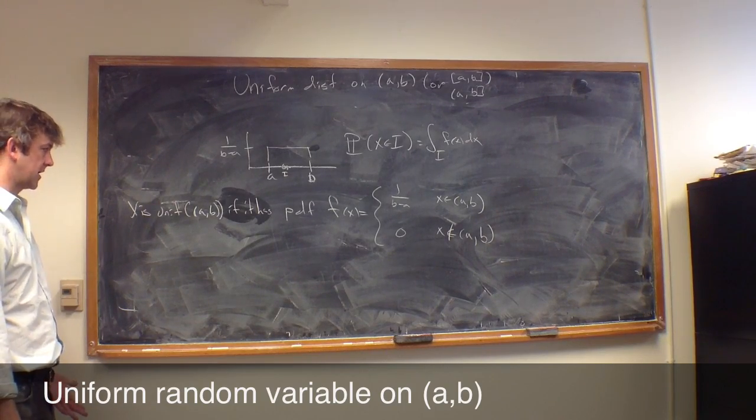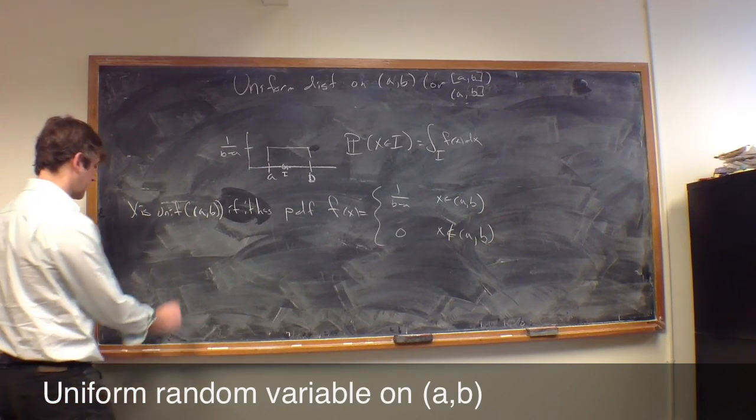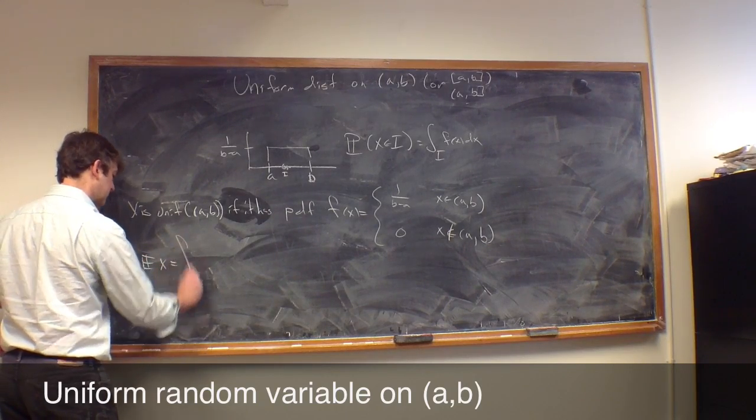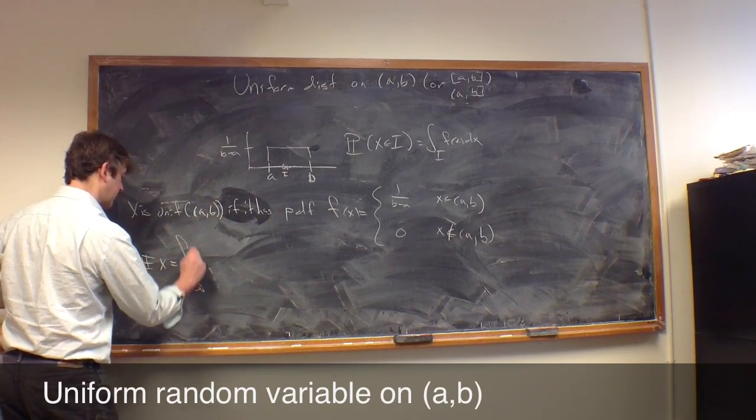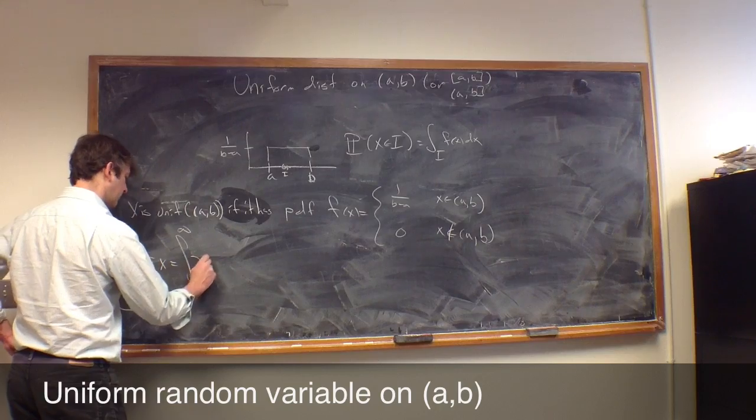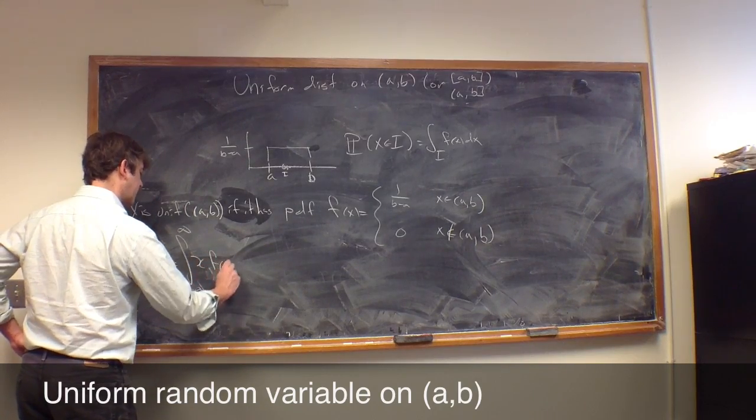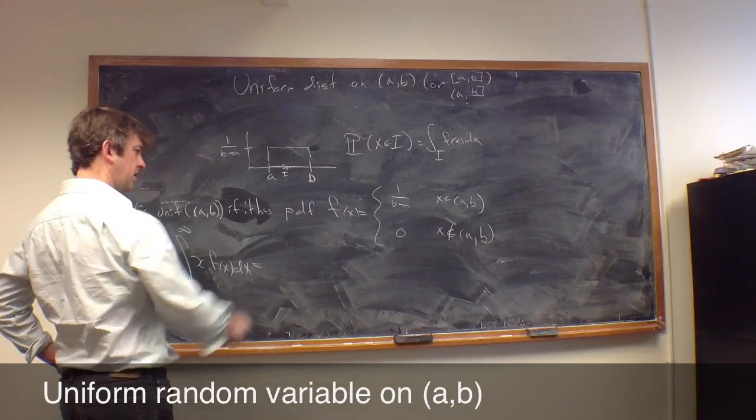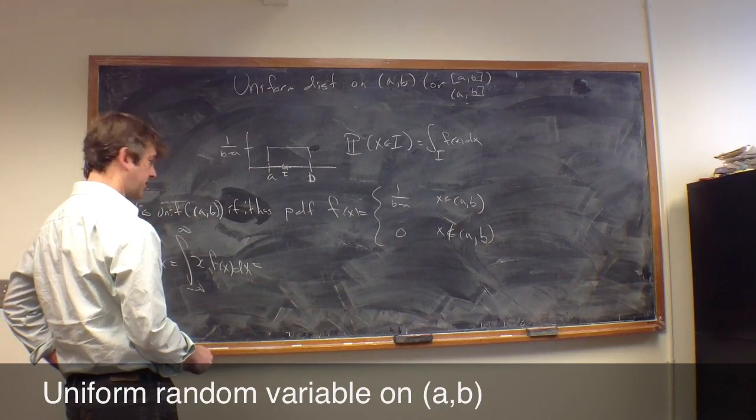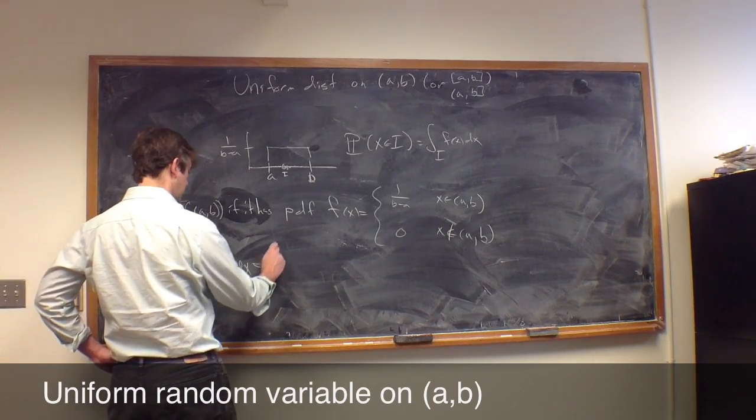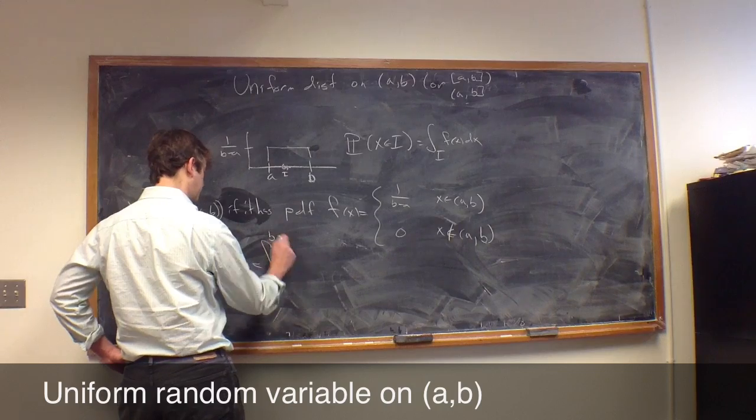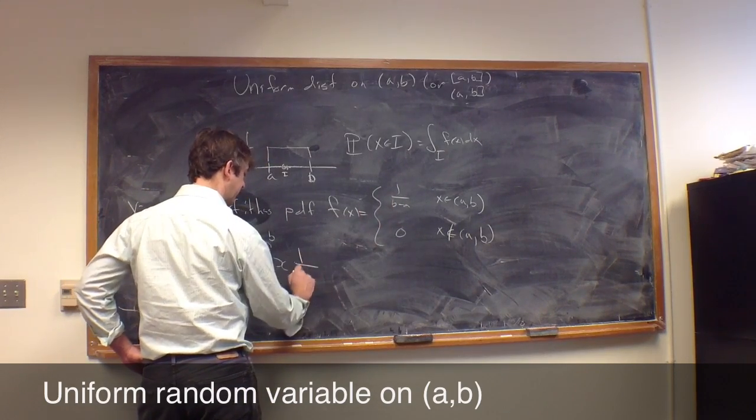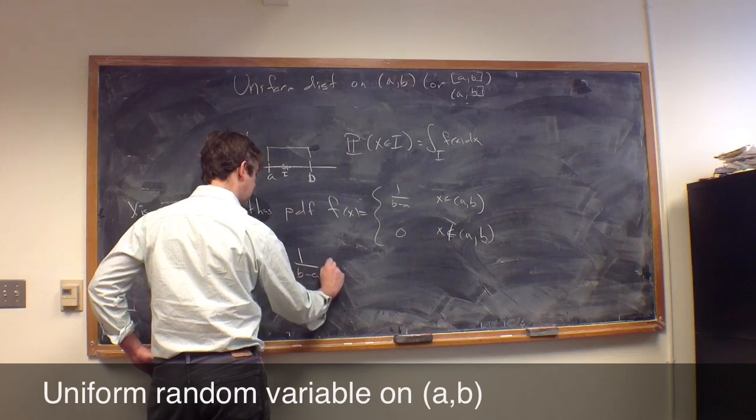Now as an exercise, let's calculate some things for this. Let's calculate the expected value of X. That's the integral from minus infinity to infinity of little x times the PDF f(x) dx. Since this is only non-zero on the interval (a,b), we can restrict this integral to (a,b), then we have little x times 1/(b-a) dx.